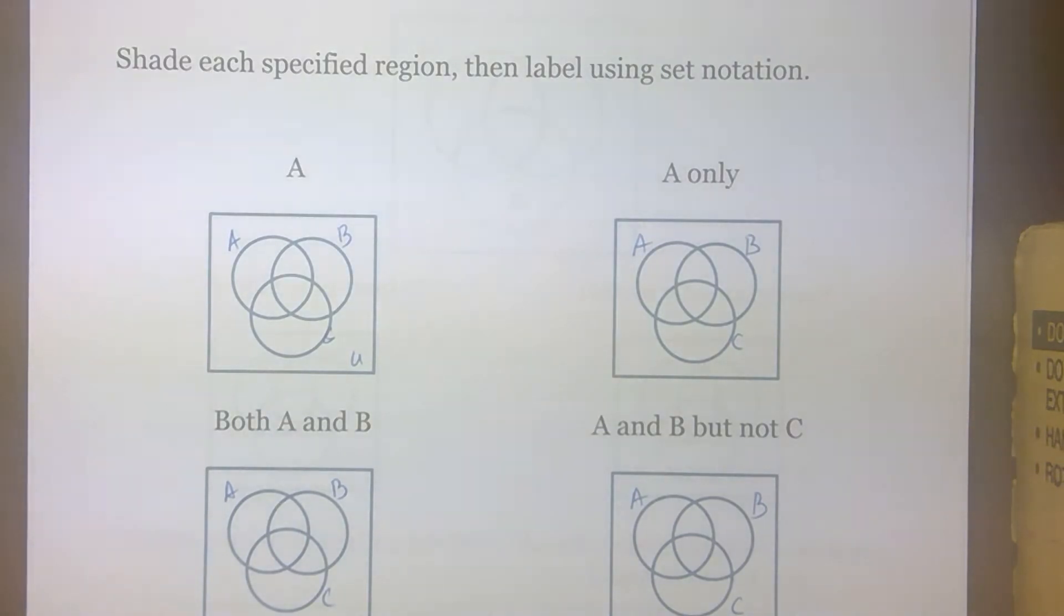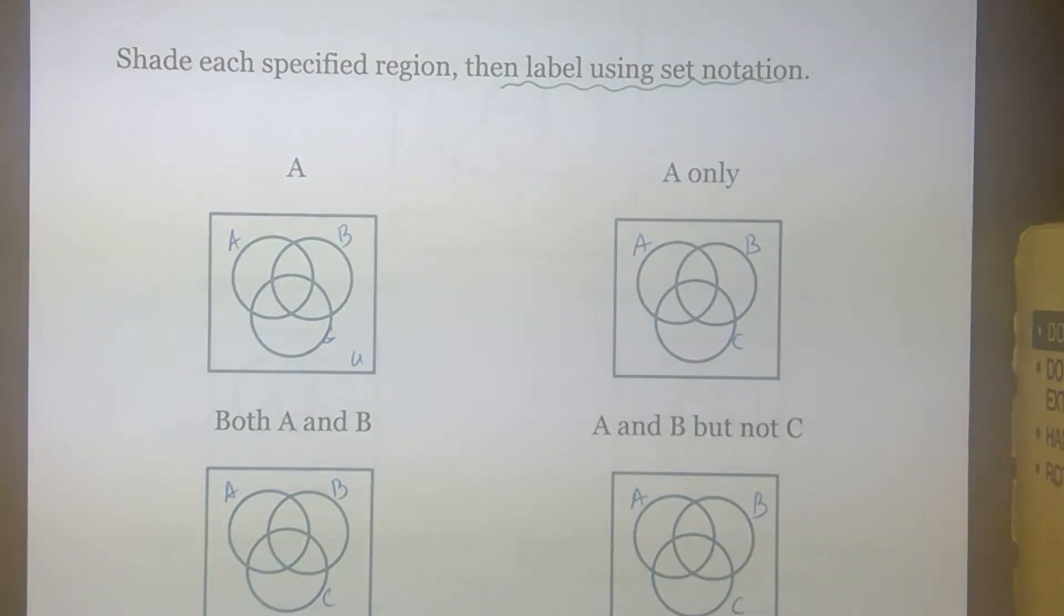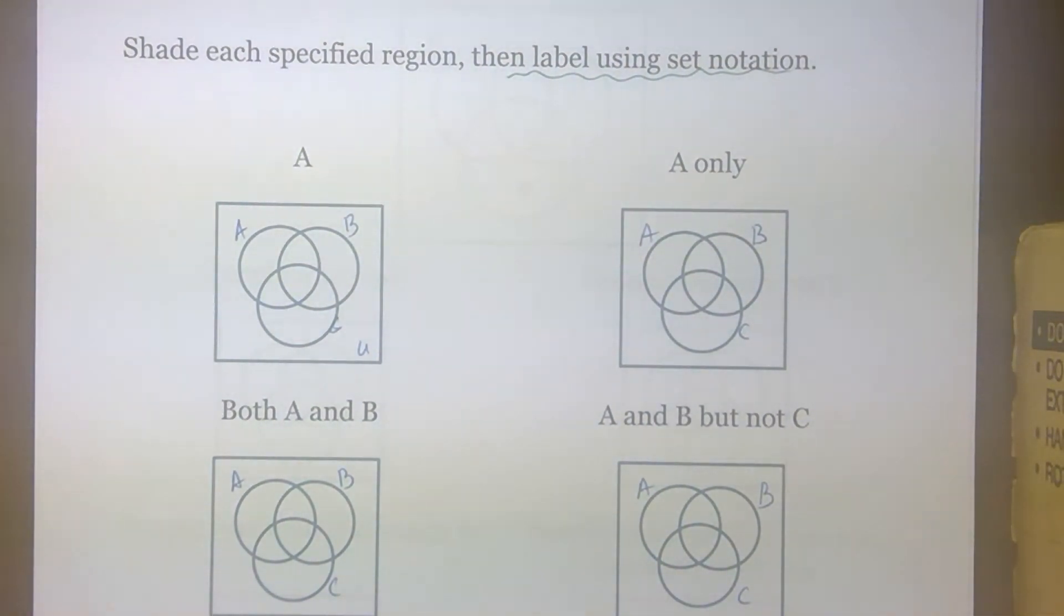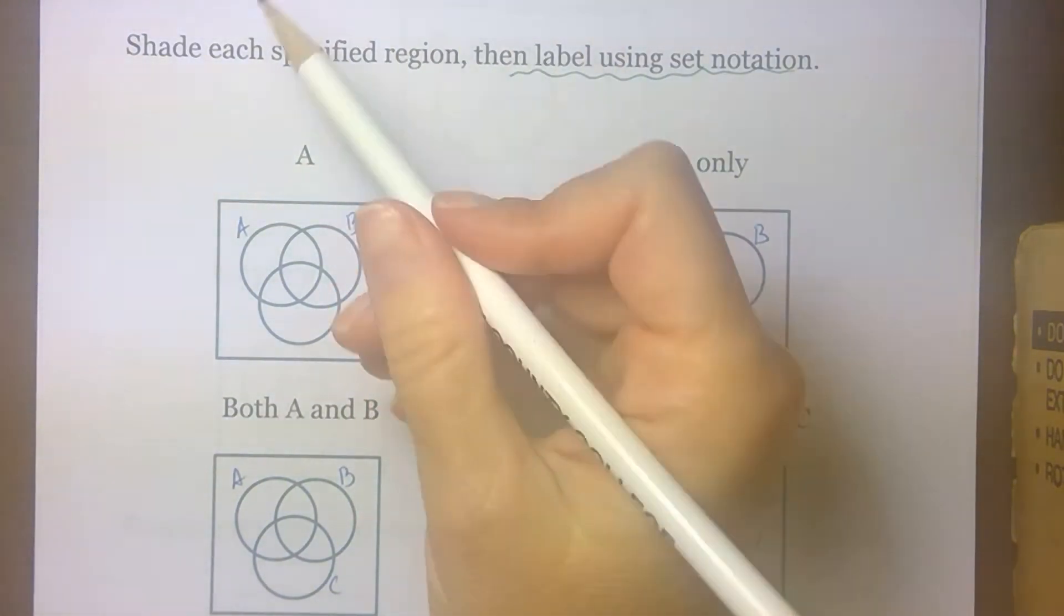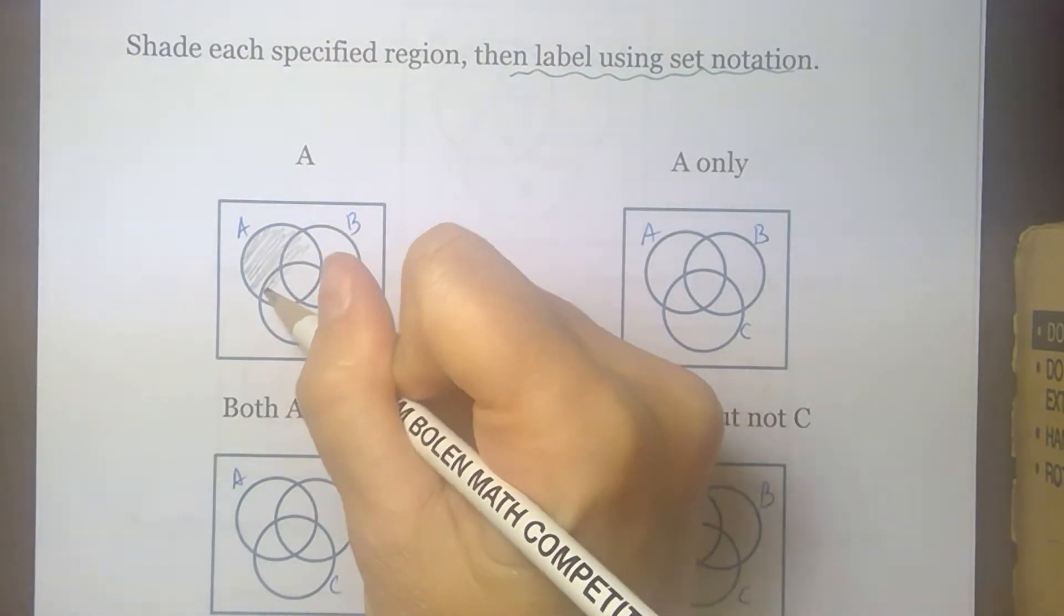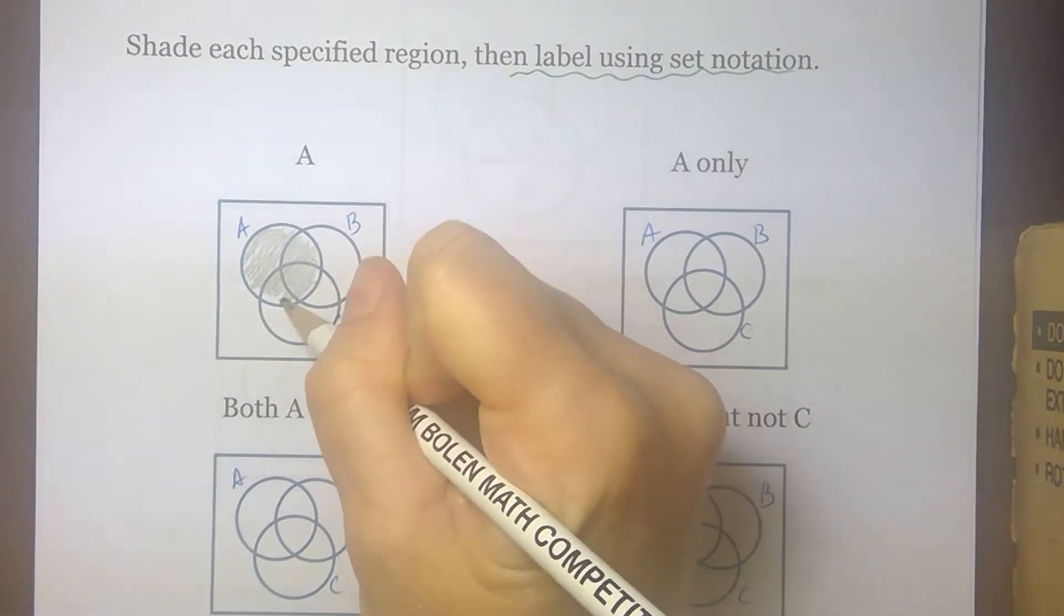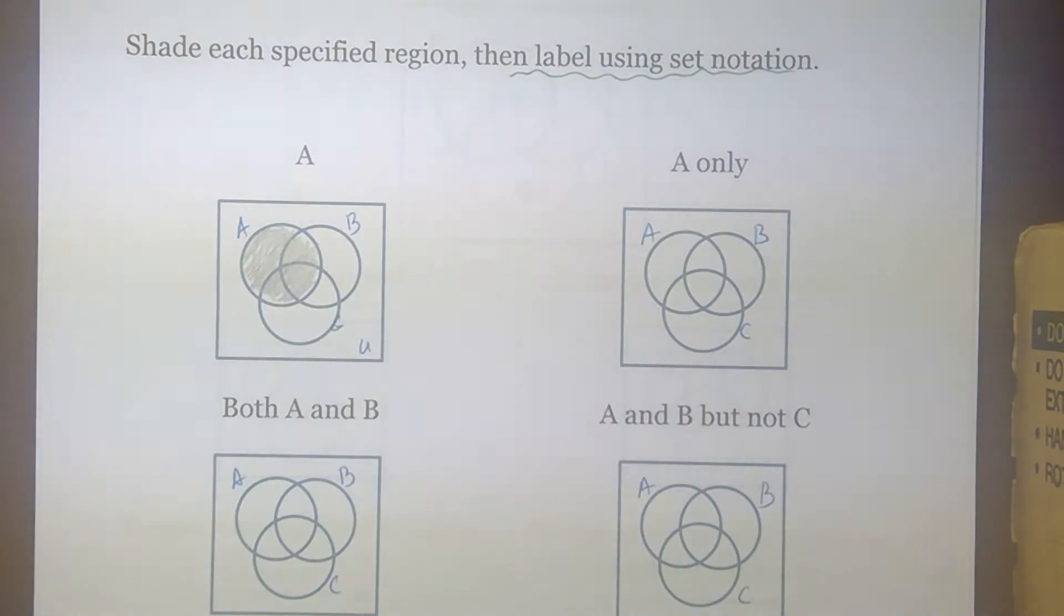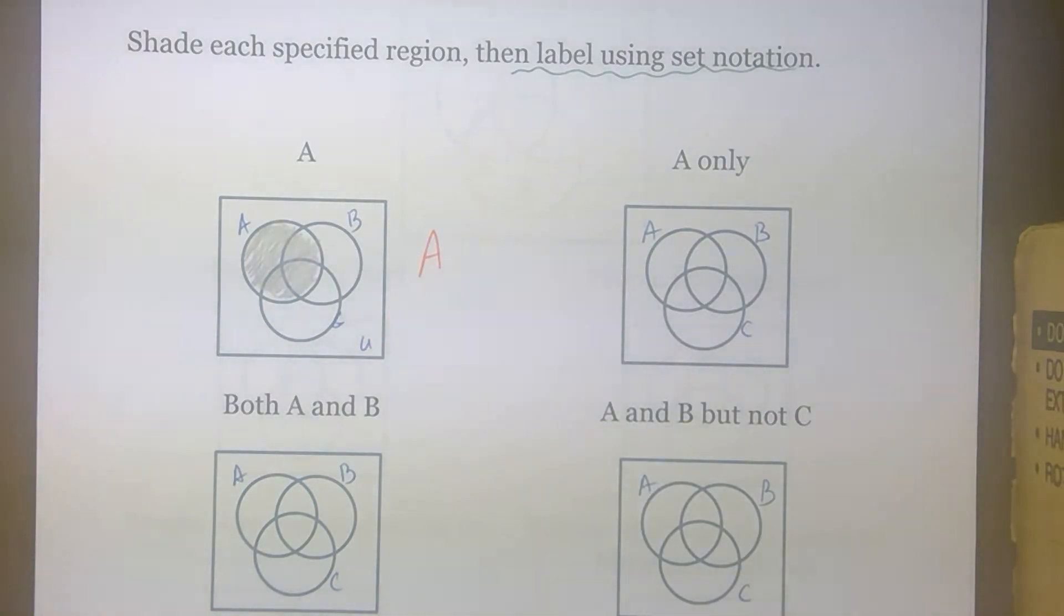Our instruction says to shade each specified region and then label using set notation. So we have two things to do for each of these. The first one is a pretty simple way to start. We're supposed to shade A. So anything inside loop A is included. We're shading four regions total, and set notation for A is simple. It's just A.